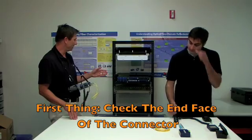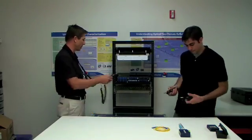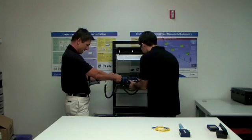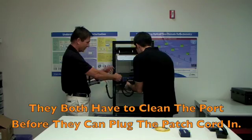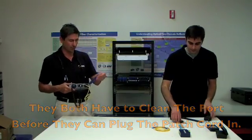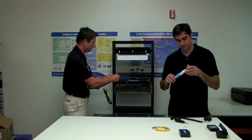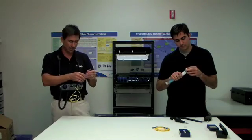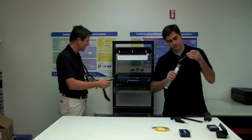So, first thing is, we need to check the end face of the connector behind the bulkhead. We pull out our probes, we come over here, and look at the connector. Mine's dirty, I'm going to have to clean it. Mine too. So, we both have to go and clean the port before we can plug our patch cord into it. Pull up the cleaning tool, go over the bulkhead, give it a couple cleans, and check it again.